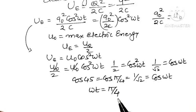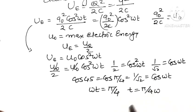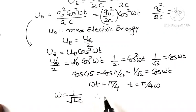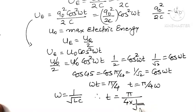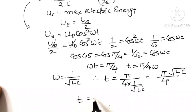Since omega t equals pi by 4, therefore t equals pi divided by 4 omega. Now omega equals 1 divided by root(LC), so substituting, t equals pi by 4 times root(LC), which gives t equal to pi divided by 4 times the square root of LC.